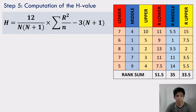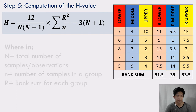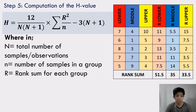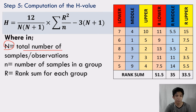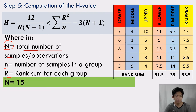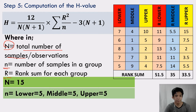Step 5: Computation of the H value. We will be using the Kruskal-Wallis formula: H = [12 / (N × (N + 1))] × [Σ(R² / n)] − 3(N + 1), where N is the total number of samples or observations, n is the number of samples in a group, and R is the rank sum for each group. Our total number of samples N is 15.